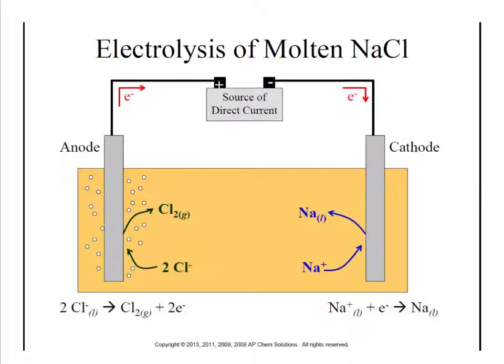Here's an example — this is how they generate pure sodium. Sodium is an alkali metal that reacts with moisture in the air, so it's never found in pure form in nature. However, it can be made in the laboratory using electrolysis. Here we have a vat full of molten NaCl — salt that they've melted down.